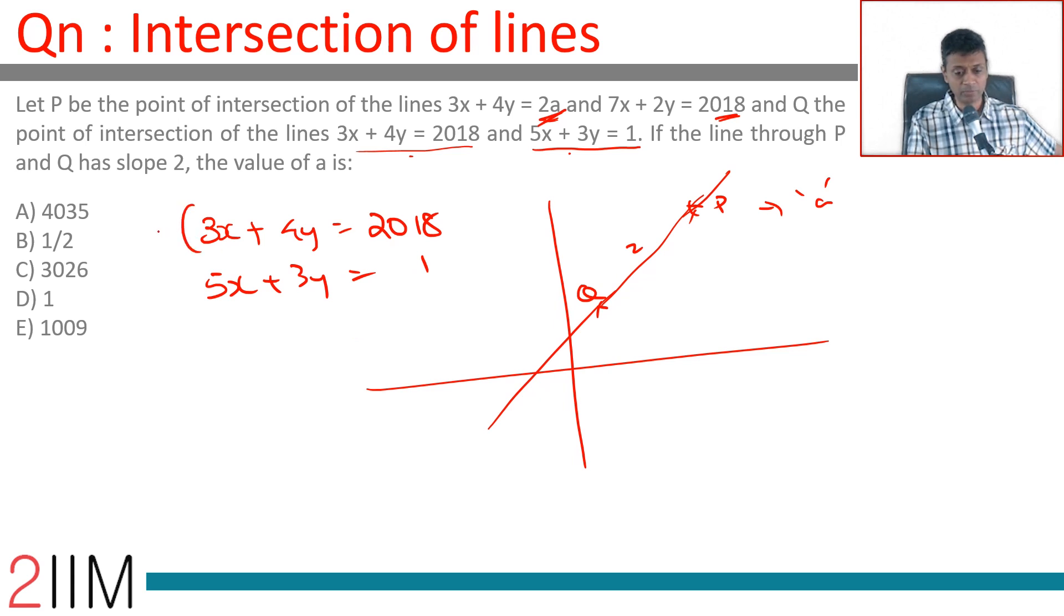We can multiply this by 5 and this by 3 and locate x, y. Then 15x + 20y = 5 times 2018 which is 10,090.